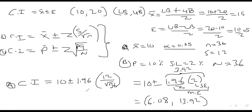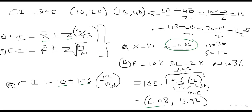The confidence interval is a range: X̄ ± z × (σ / √n). Here the mean is 10, the Z of 1.96 comes from α = 0.05, and the standard error is σ/√n = 12/√36 = 2. Multiply 1.96 × 2 = 3.92 to get the margin of error. Lower bound = 10 − 3.92 = 6.08; upper bound = 10 + 3.92 = 13.92.